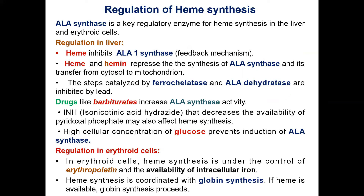Heme is a regulatory molecule for heme synthesis in the liver and erythroid cells. In the liver, ALA synthase 1 is subject to a feedback mechanism — this is allosteric regulation. Heme and its iron-free oxidation product hemin repress the production of ALA synthase by regulating gene transcription and its transfer from cytosol to mitochondria. The steps catalyzed by ALA dehydratase and ferrochelatase are inhibited by lead or other heavy metals. Drugs such as barbiturates, which are metabolized in the liver by cytochrome P450, decrease intracellular heme concentration and induce ALA synthase, so heme synthesis increases. High cellular concentration of glucose prevents induction of ALA synthase.